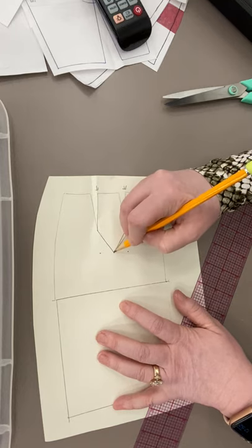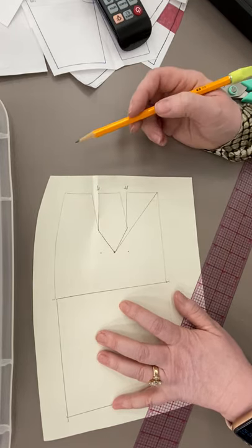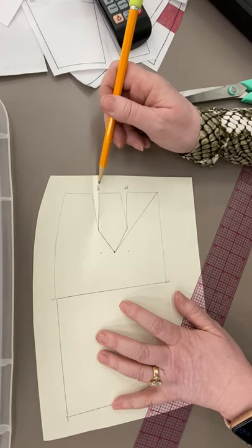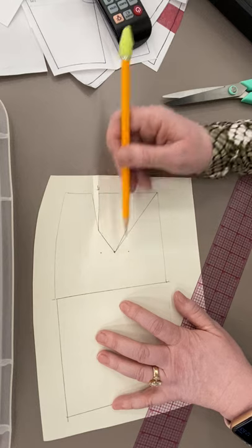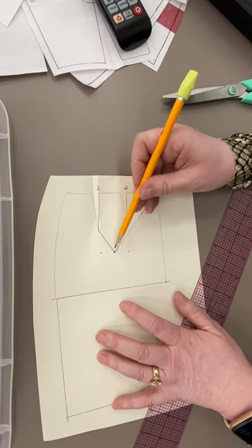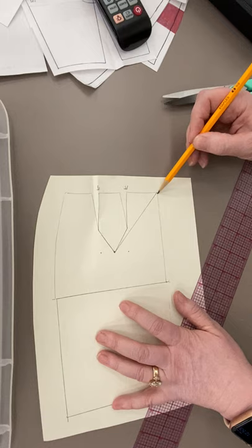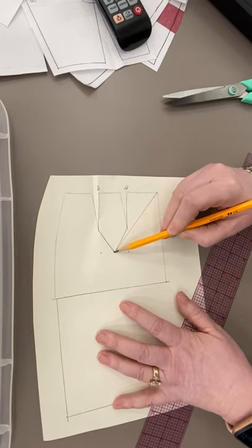Now, this pivot point becomes a true pivot, because we are going to take our scissors, and we're going to cut down this line, to but not through the point. And down this line, to but not through the point, and down this line, to but not through the point.